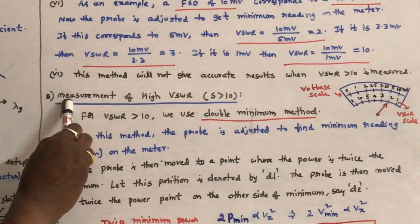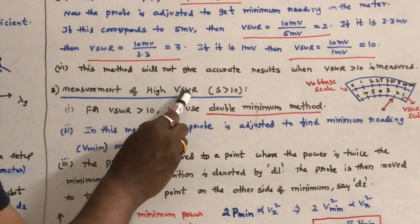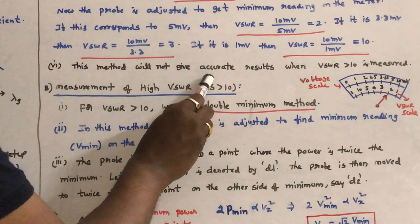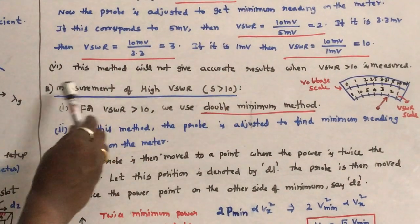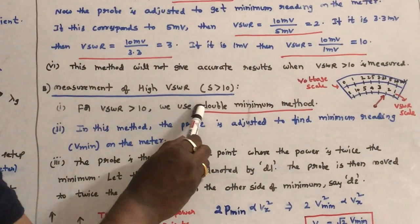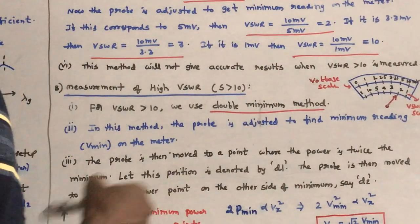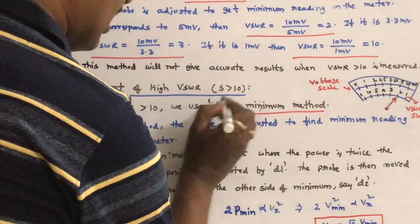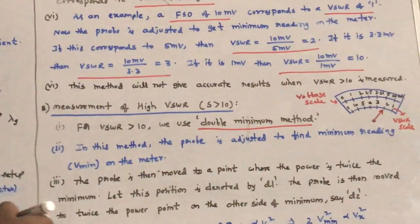For measurement of high VSWR — when VSWR is greater than 10 — we use the second method, which is also called the double minimum method. This is a very important method.